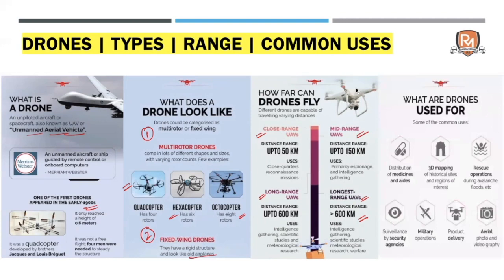The common uses of drones currently include videography, delivery of medicines, 3D mapping, and military operations. Companies like Amazon in the USA are trying to deliver their products with the help of drones. A lot of people are now starting to use drones, which can be a bigger problem. If a country wants to allow drone usage, there has to be a specific policy and certain norms which have to be fulfilled — otherwise, people with different ideologies who want to harm somebody can also use this technology, and that is where the problems arise.